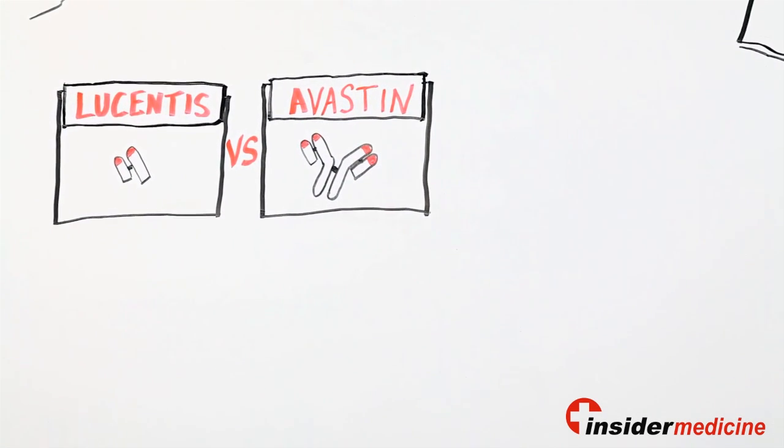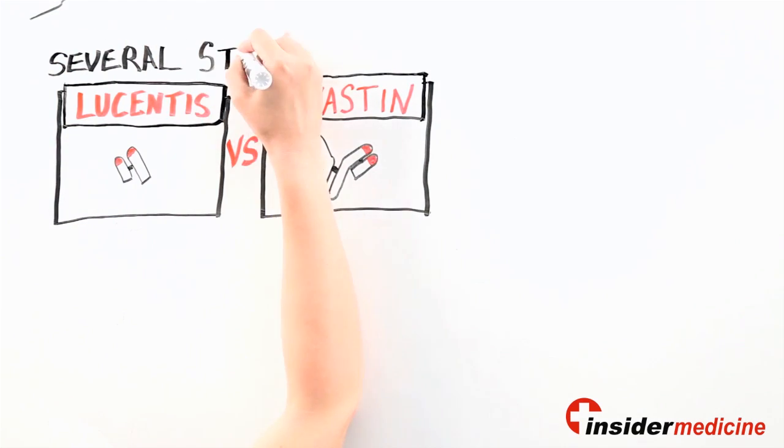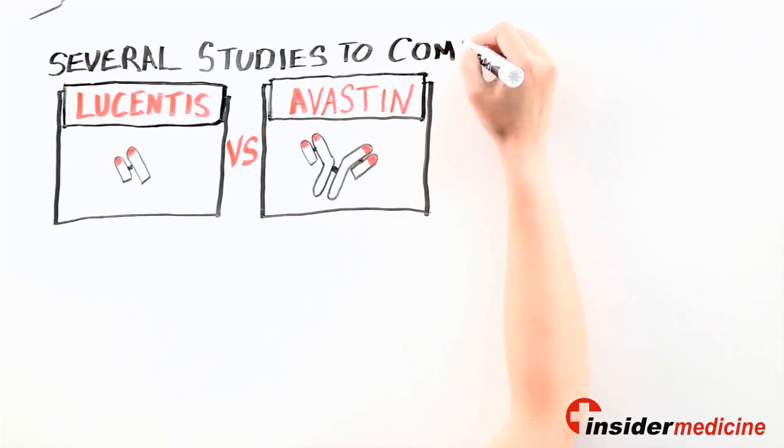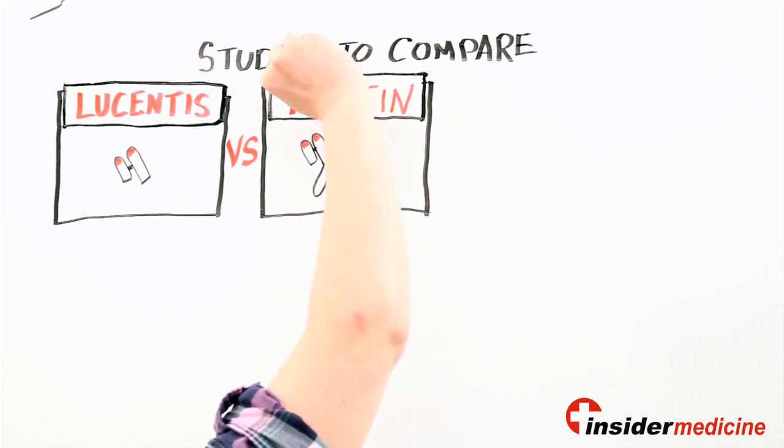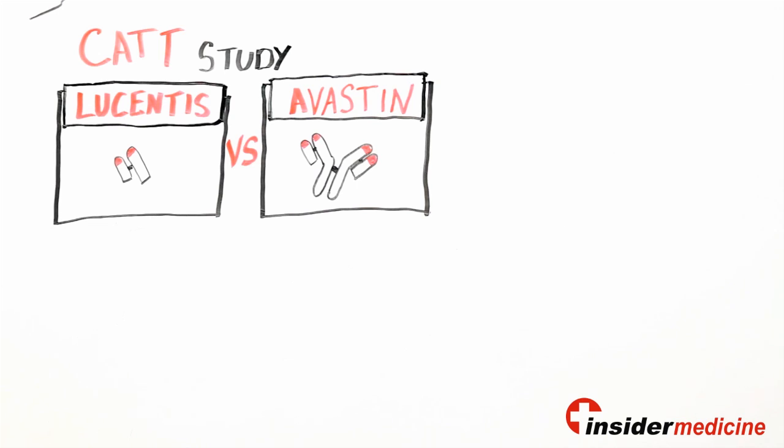Because of the interest in these two drugs, several studies were also started to compare Avastin head-to-head with Lucentis. One of these studies, the CAT study, which was paid for by the NIH, showed that both drugs were equally effective in treating age-related macular degeneration. Both had tremendous benefits for patients. But this same study raised concerns that Avastin was not as safe as Lucentis.